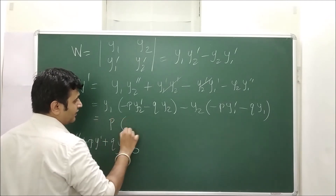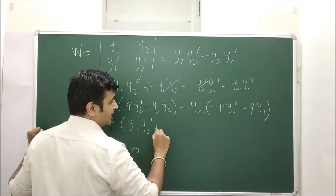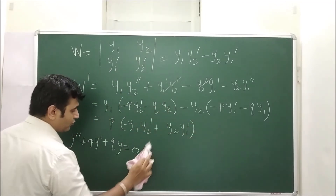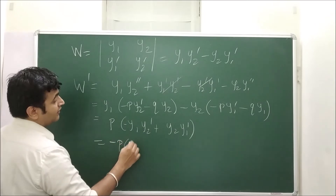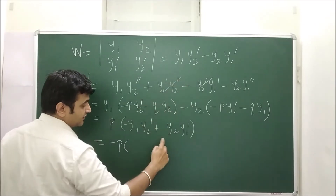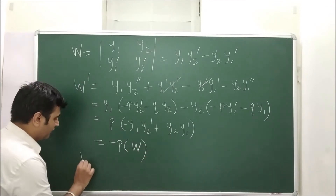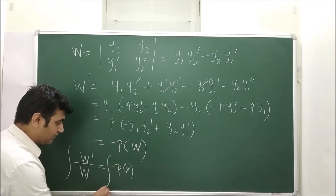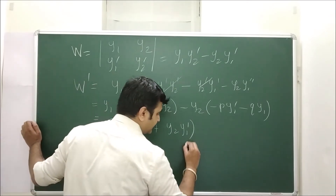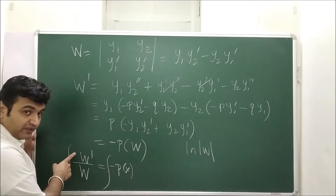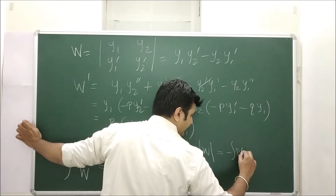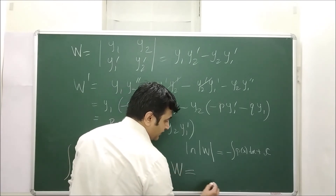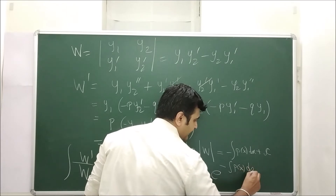Substituting these, the q terms cancel due to opposite signs, and we get W' = −p·(y1·y2' − y2·y1'), which is just −p·W. So W'/W = −p(x). Integrating both sides, ln|W| = −∫p(x)dx + C. Therefore, the Wronskian is W = c·e^(−∫p(x)dx), where c = e^C is a constant.